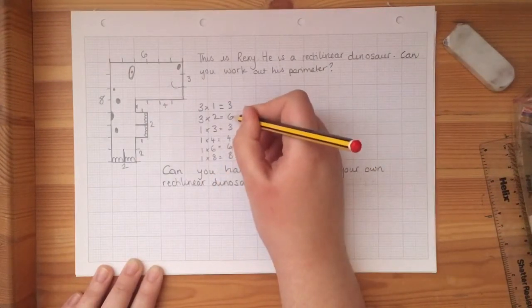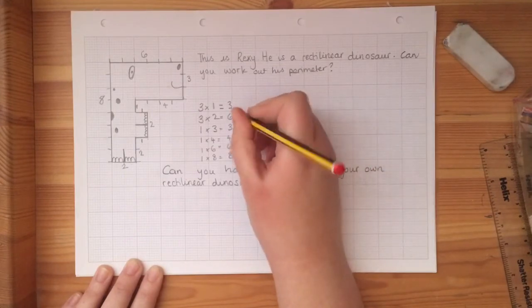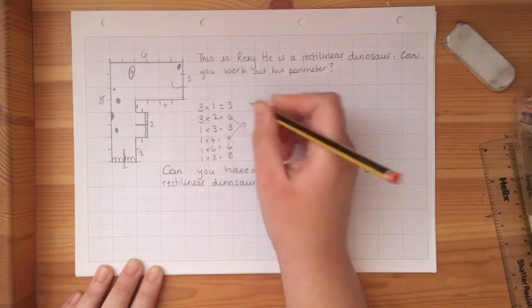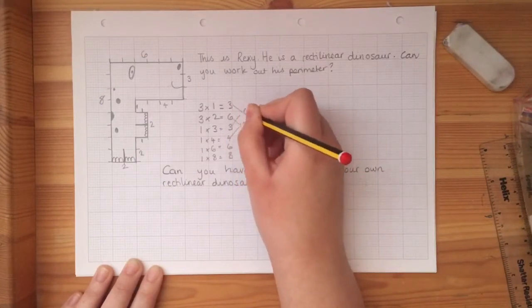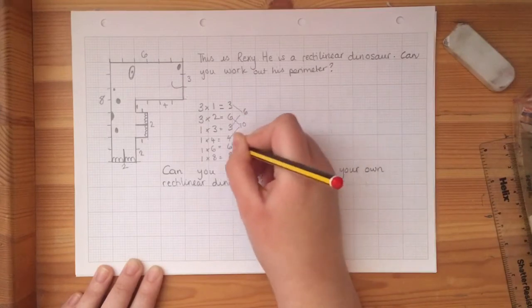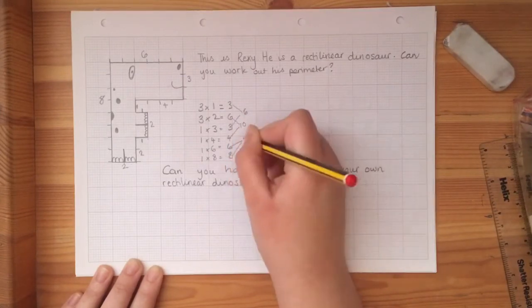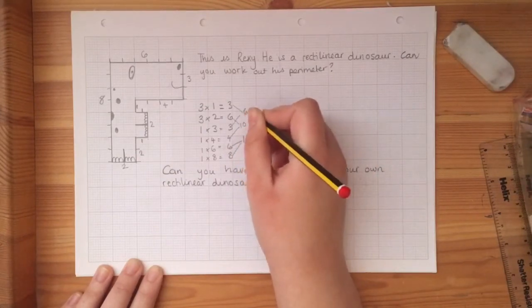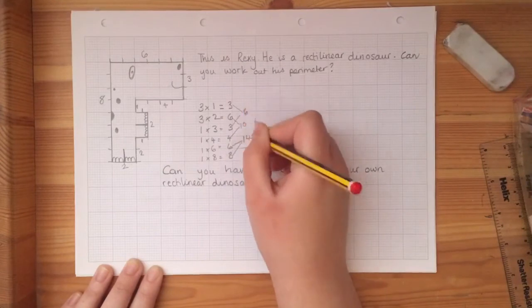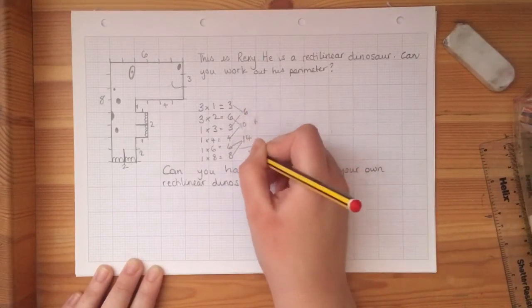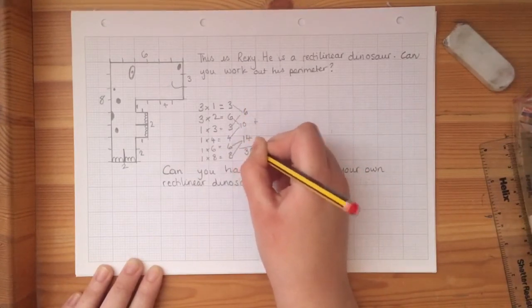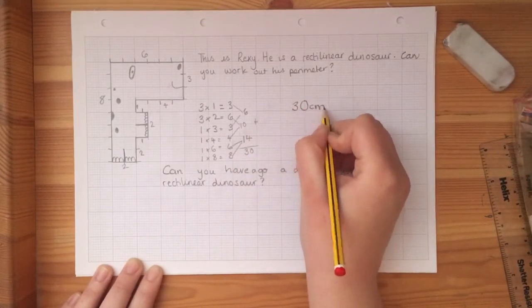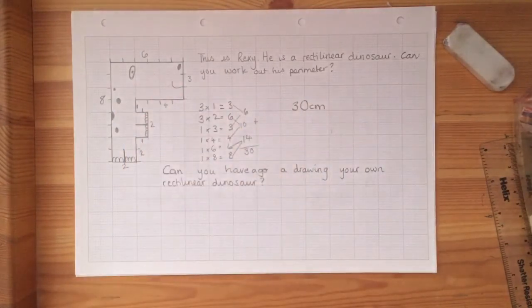So this is where I do like to simplify even more. So I know that I've got a six and a four here. So that makes 10. I've got two threes here. That makes six. And then I've got a six and an eight here. And that makes 14. So now I've just got three numbers to add together. So six add 14 is 20. 20 add 10 is 30. So that's 30 centimeters for Rexy, the rectilinear dinosaur.